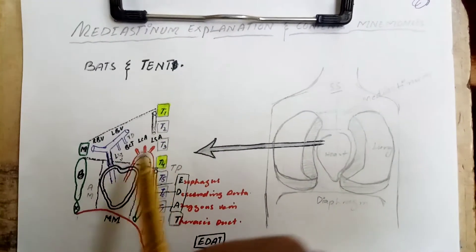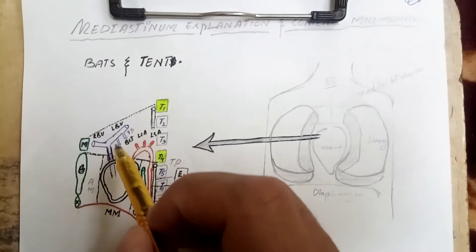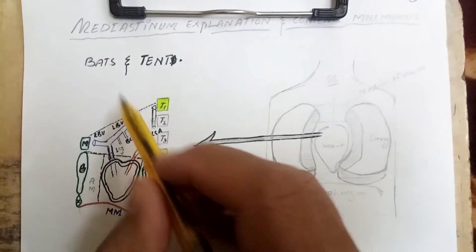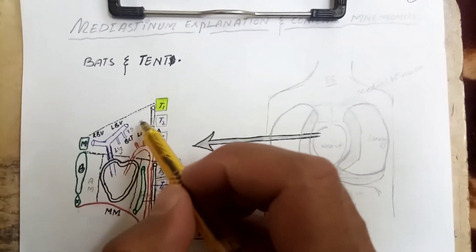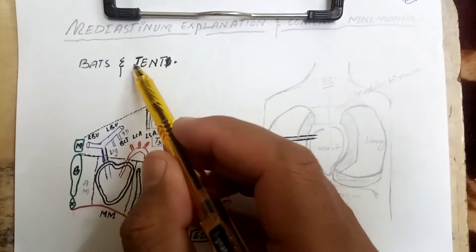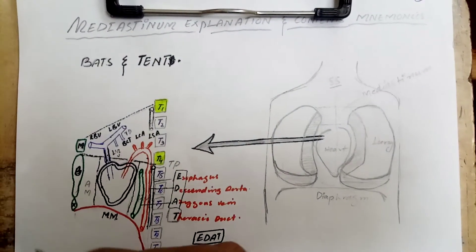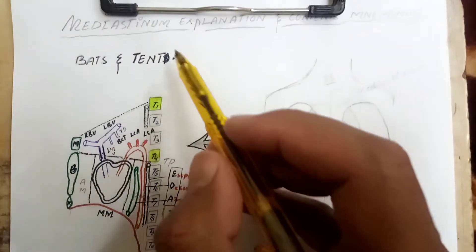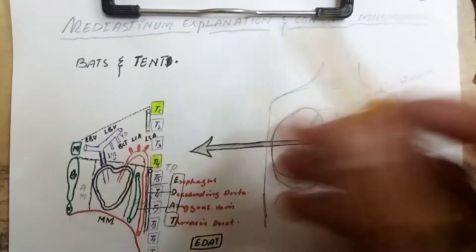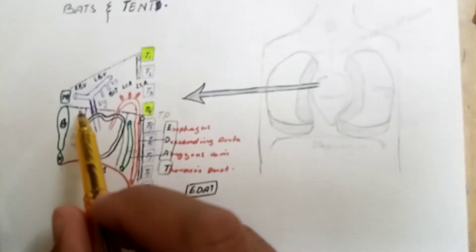To memorize the contents of the superior mediastinum, we have the mnemonic 'BATSTEN': B for the brachiocephalic right and left veins, A for the arch of the aorta, T for the thymus, S for the superior vena cava, T for the trachea, E for the esophagus, and N for the nerves — mainly the phrenic and vagus nerves.